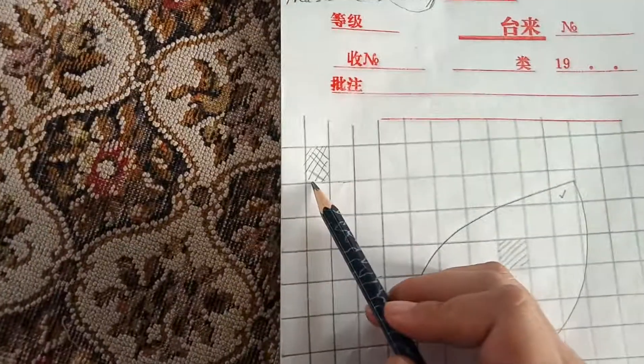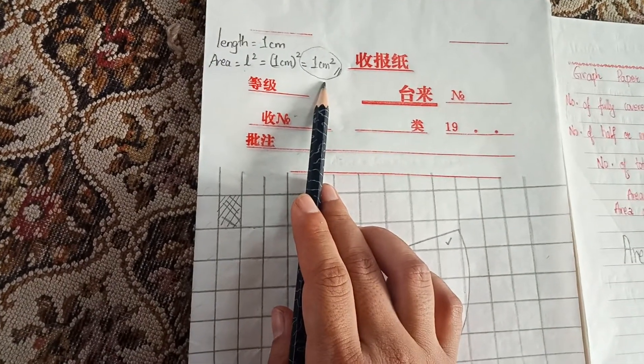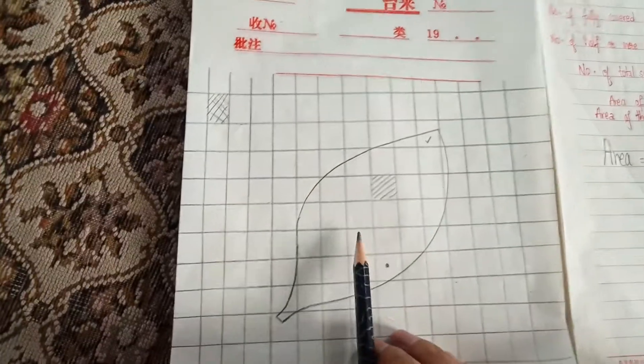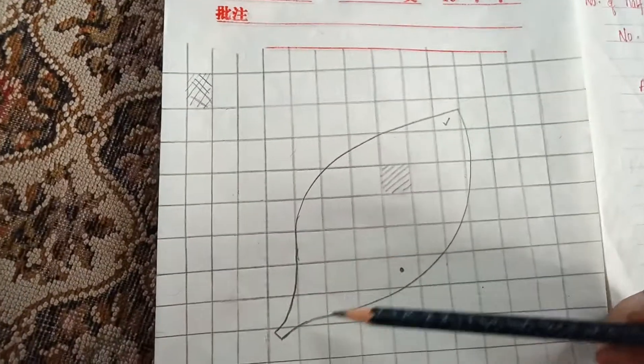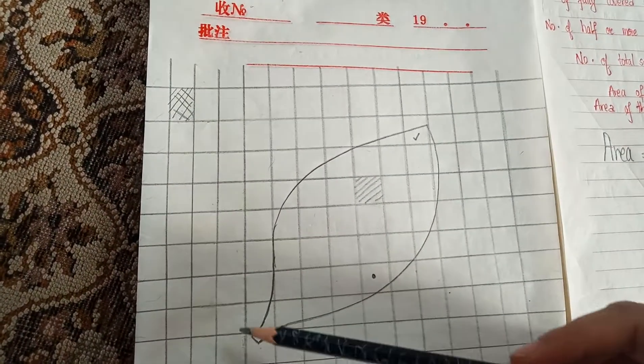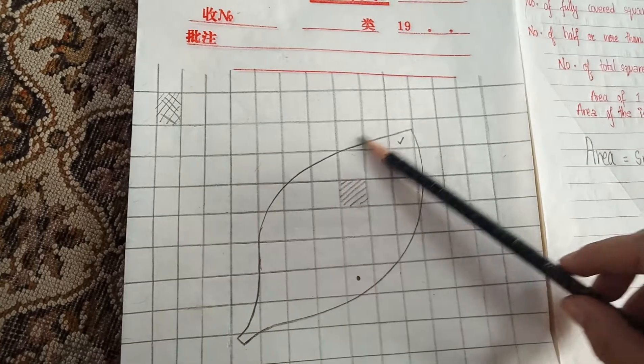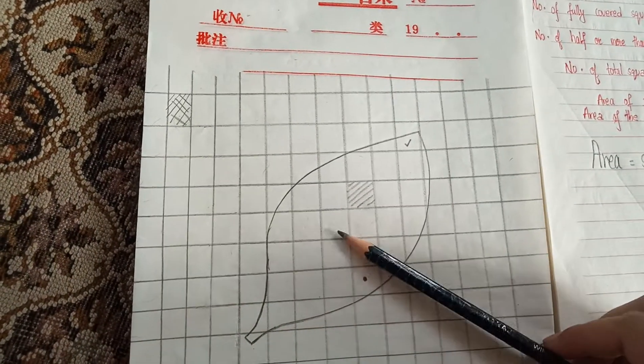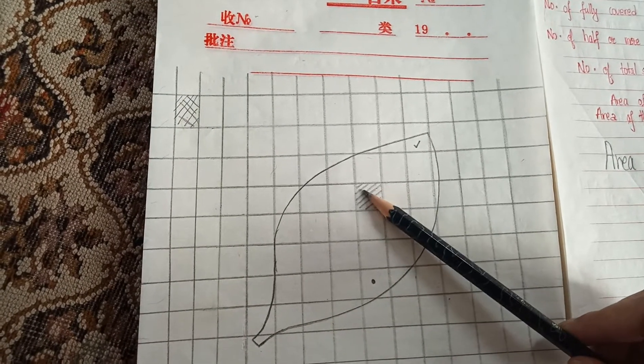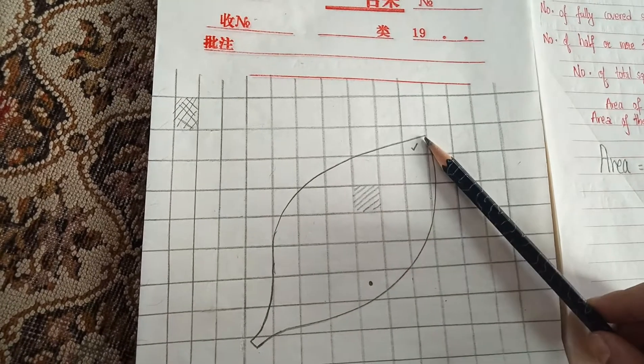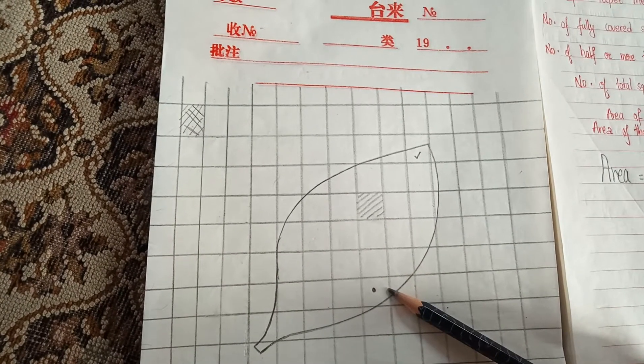The area of the smallest square in this graph paper is one centimeter squared. Here I have made an outline of a leaf. The leaf has covered some squares that are completely filled, some squares that are half filled, and some that are more than half filled.